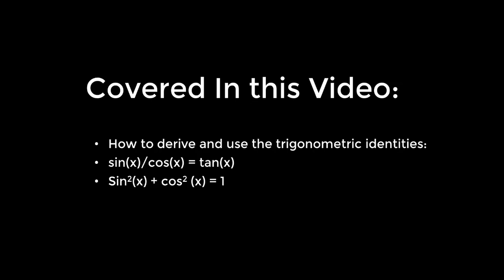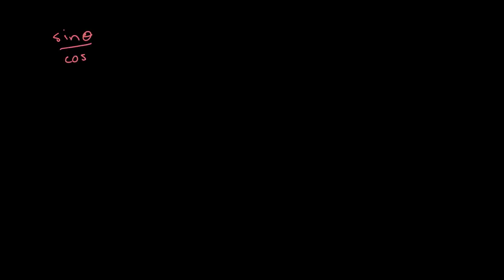In this video I will be teaching you about two basic trigonometric identities. We come across the first identity when we divide sine of theta by cosine of theta. So we have sine of theta over cosine of theta.